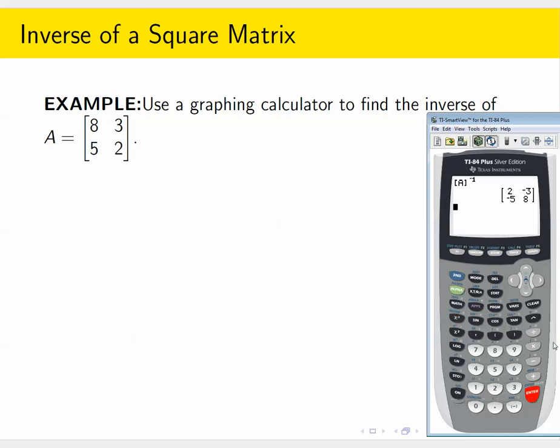2, negative 3, negative 5, 8. That's it. That's exactly what we would get calculating this another way by hand.